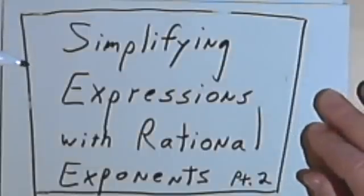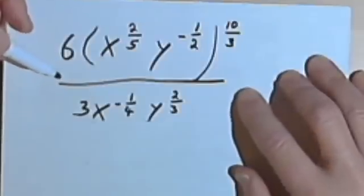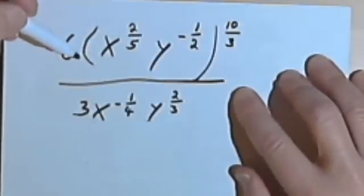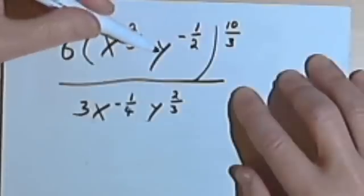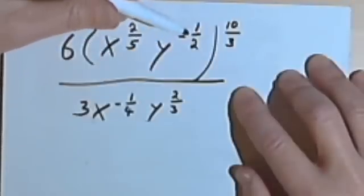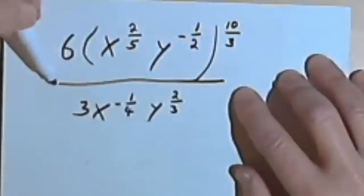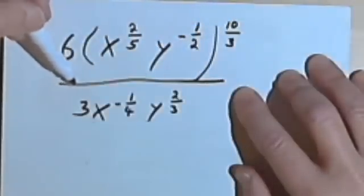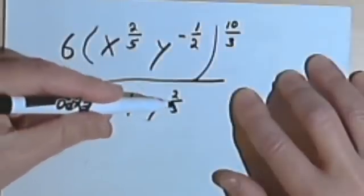This is going to be the second video about simplifying expressions with rational exponents. Here's the problem this time. I've got an algebraic fraction: 6 times x to the 2/5, y to the negative 1/2, and that whole expression is raised to the 10/3 power. That is the numerator. The denominator is 3x to the negative 1/4, y to the 2/3.